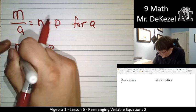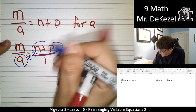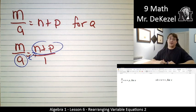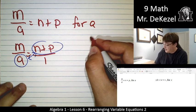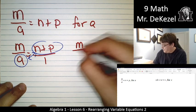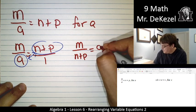We can go ahead and switch them. Since the variable we want is on the bottom, we can go ahead and switch it with what's on the top on the other side. So m divided by n plus p is equal to a.